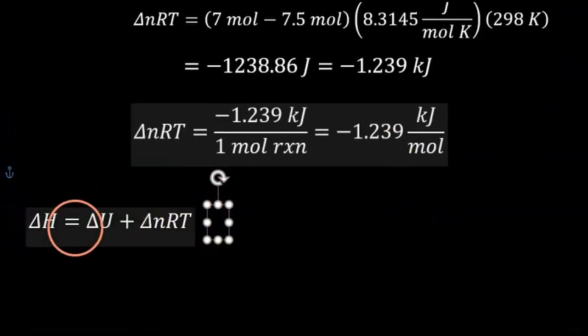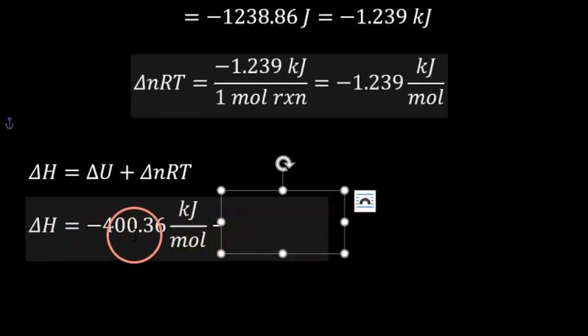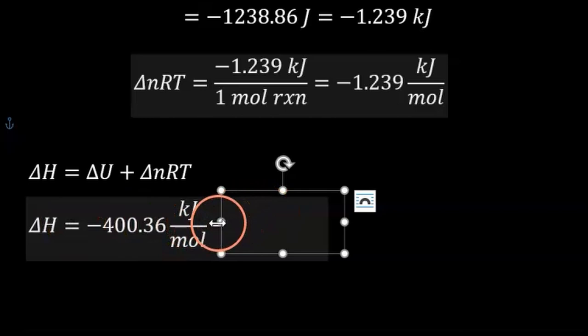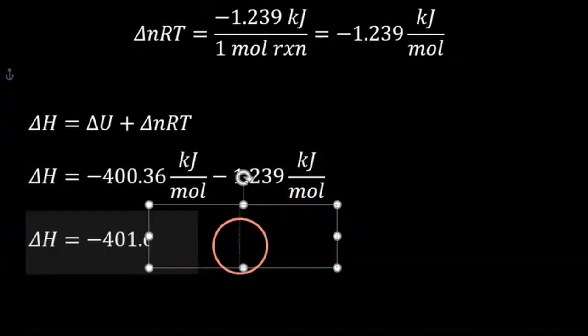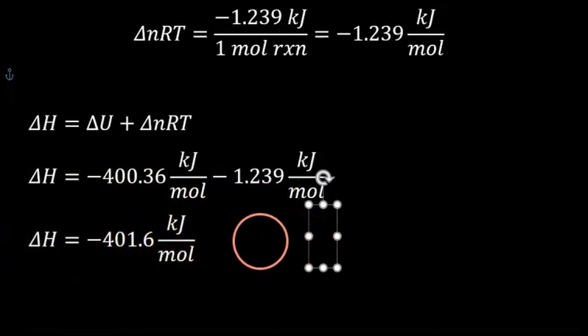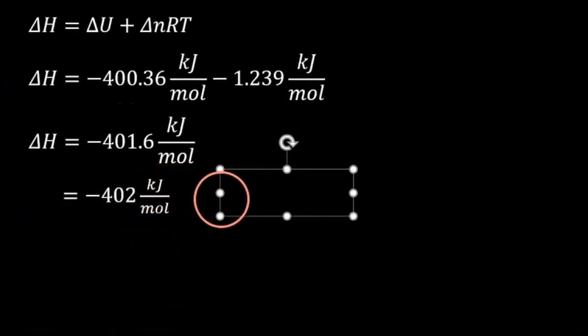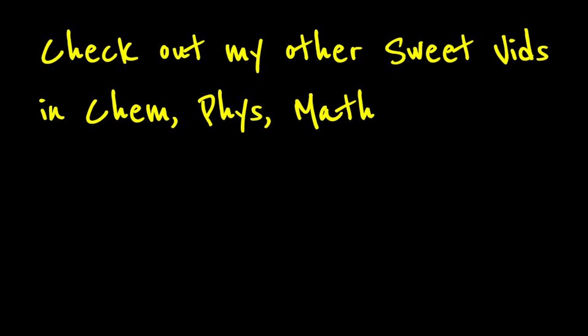Now we can plug into the enthalpy equation: delta-H equals negative 400.36 kilojoules per mole plus negative 1.239 kilojoules per mole. Adding these together gives approximately negative 401 to negative 402 kilojoules per mole, rounded to three significant figures. That's our change in enthalpy. I have many other videos on calorimetry, bomb calorimetry, constant pressure calorimetry, and other aspects of thermodynamics. Feel free to check those out — thanks for watching, see you in the next video.